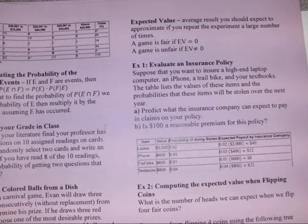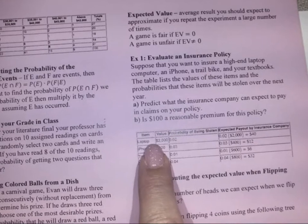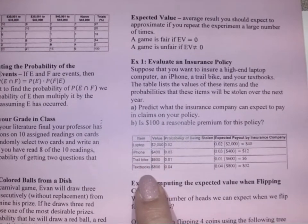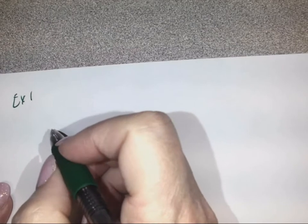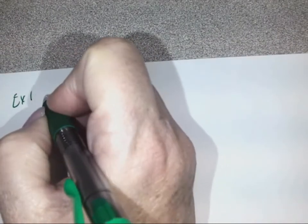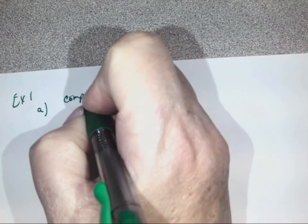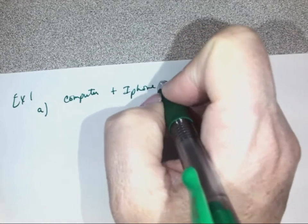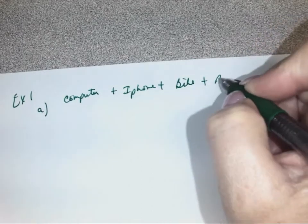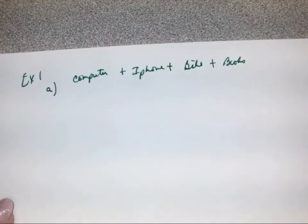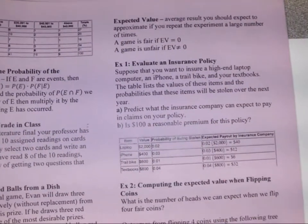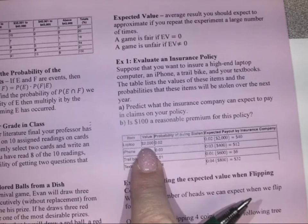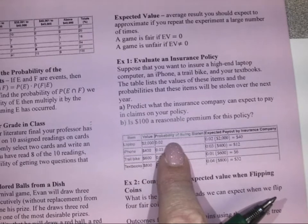We have a chart here showing the value of our laptop, iPhone, trail bike, and textbooks, along with the probability of each being stolen and the expected payout by the insurance company. The expected payout is found by taking the value times the probability of it being stolen.